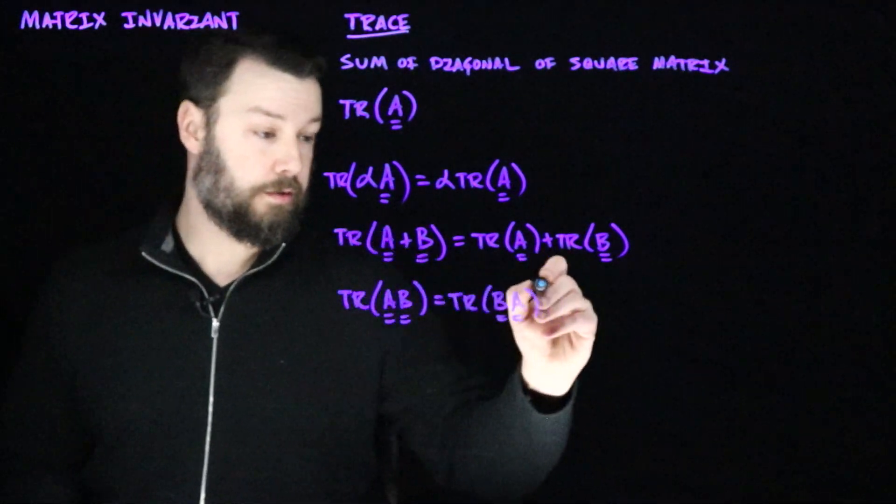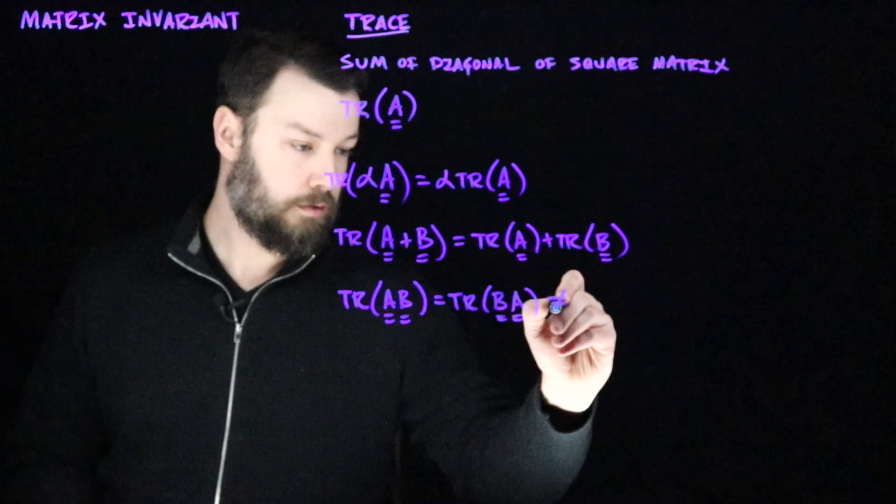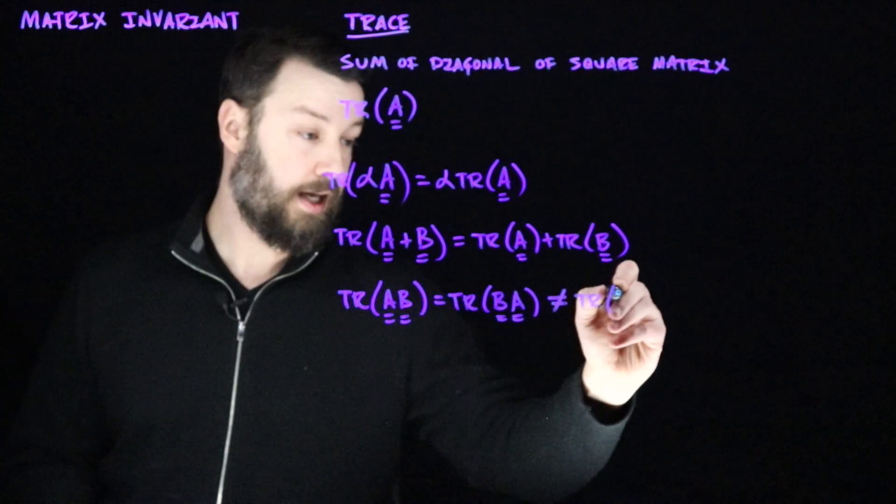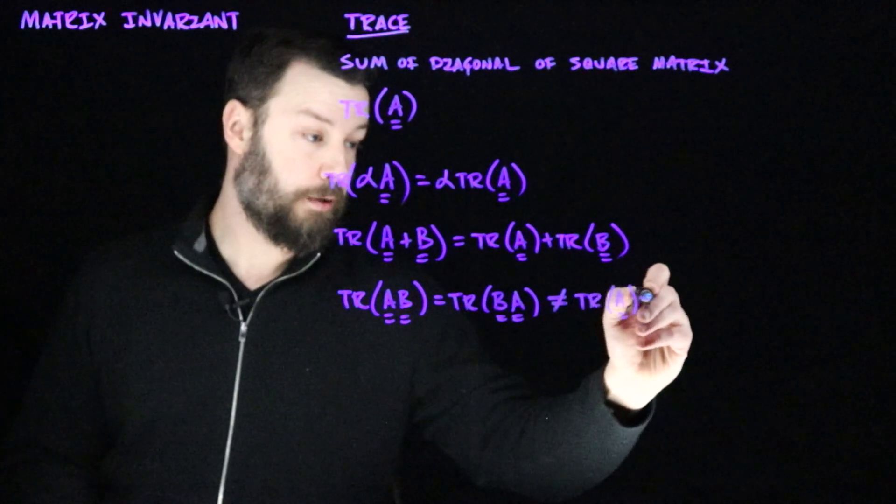Note, in particular, that this is not equal to trace A multiplied by trace B.